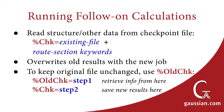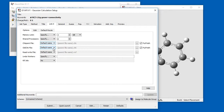You can use data from an existing checkpoint file without modifying it by using the %OldCheck directive. This command copies data from an existing checkpoint file for use within the current job without modifying the original file, and a different checkpoint file is used for the new job. Here, we use the old check file controls in the Link0 panel and specify the file as benopt, which refers to benopt.chk in the current directory.